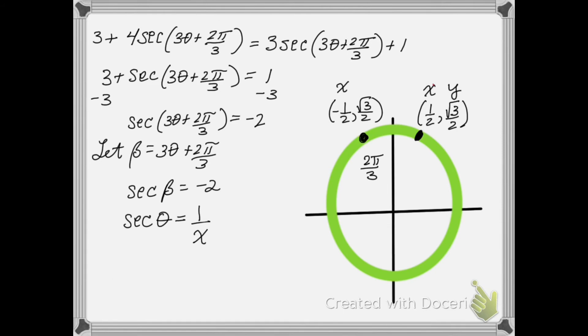So that would be 2 pi over 3. And then there's another one here. This angle down here, at 4 pi over 3 radians, that has an x value of negative 1 half. So that's also 1 over x is going to be equal to negative 2. So I've got two angles here. Now I know that beta is equal to 2 pi over 3.